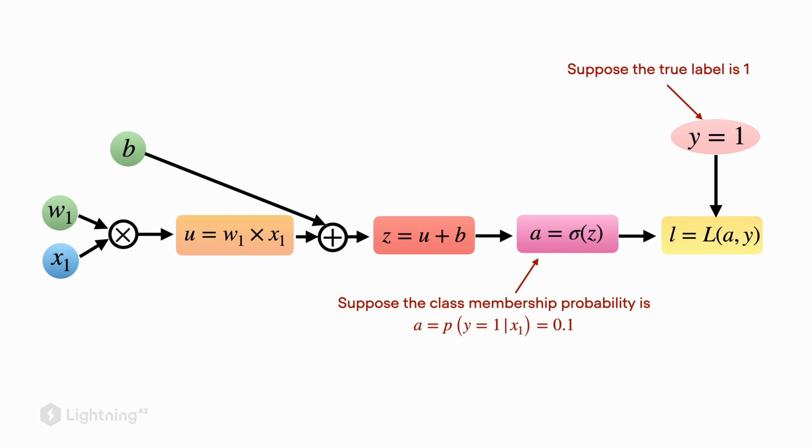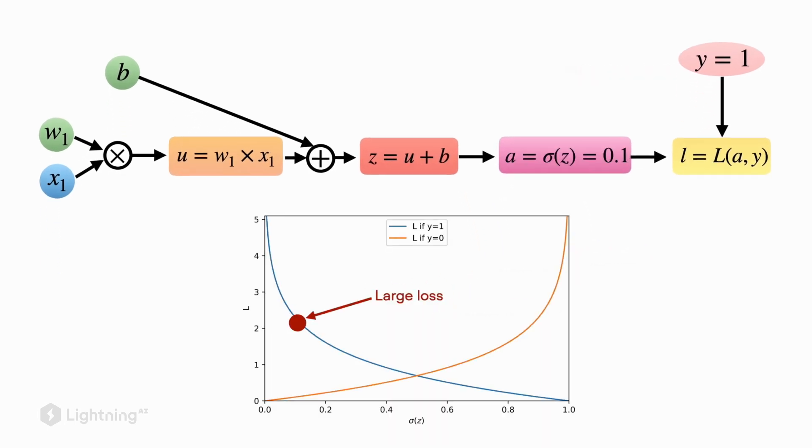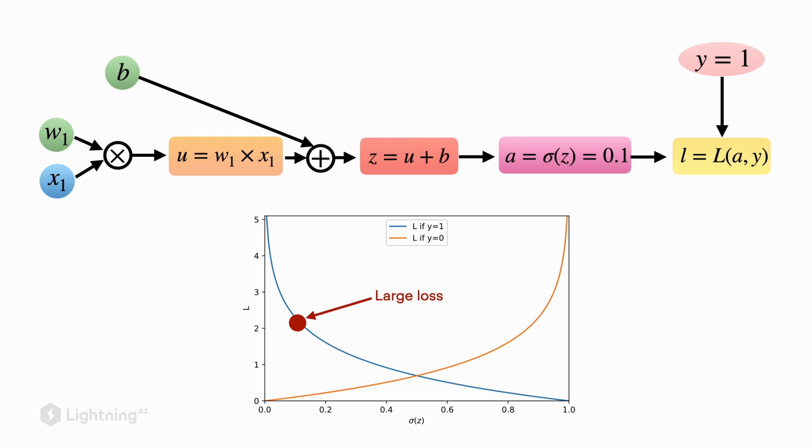If you recall the plot from the previous video, where we introduced the logistic regression loss function, what will happen here is that we will incur a relatively large loss. That's because the true class label is 1, and the activation value that is output is 0.1, which is relatively far off from 1.